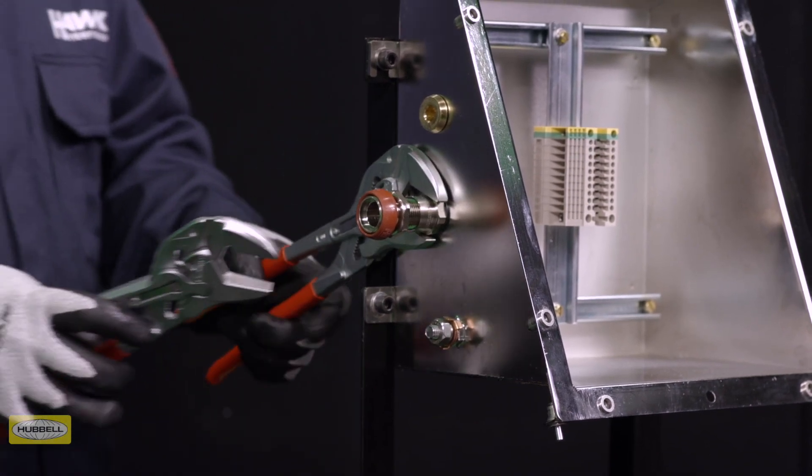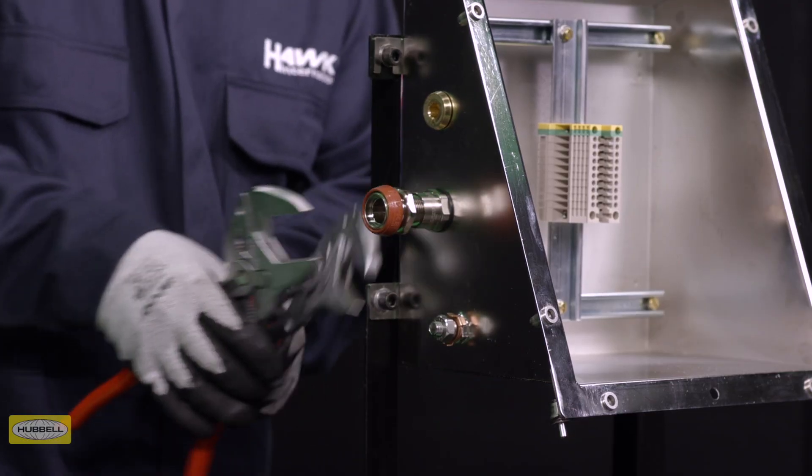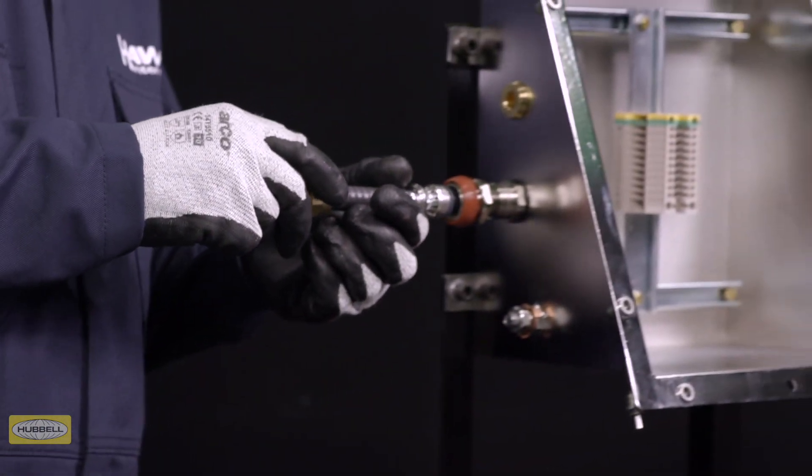Tip: Depending on the enclosure used, the method of installation will vary. Slide the cable through the entry until the pot is seated in the entry.